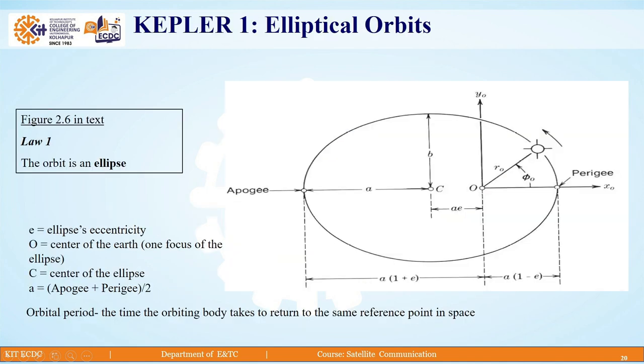Let us discuss Kepler's first law, elliptical orbit. This law states that the orbit is an ellipse. The orbit of satellite around earth is elliptical with the center of the earth lying at one of the foci of the ellipse.